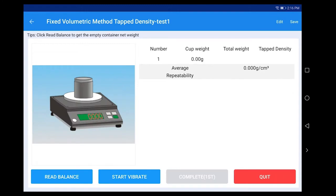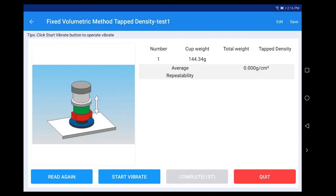Click Start Measure. Place the empty container on the balance. Click Read Balance to read the net weight of the empty container.